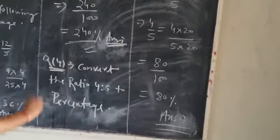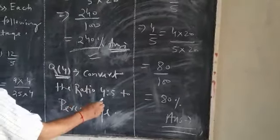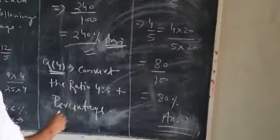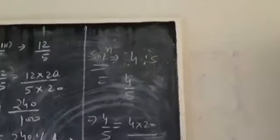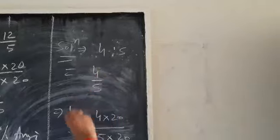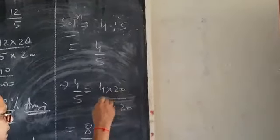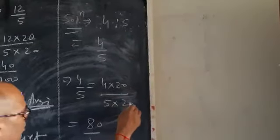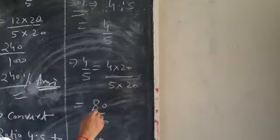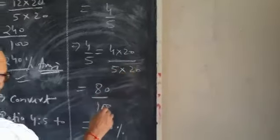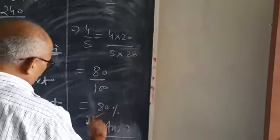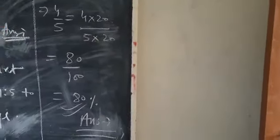Question number 4: Convert the ratio 4 to 5 to percentage. Therefore, the solution is 4 upon 5 is equal to 4 into 20 divided by 5 into 20. 4 times 20 is 80 and 5 times 20 is 100. Therefore, it will be equal to 80 percent. It is the correct answer.